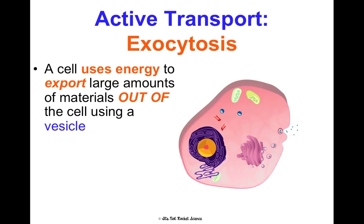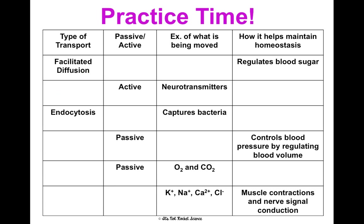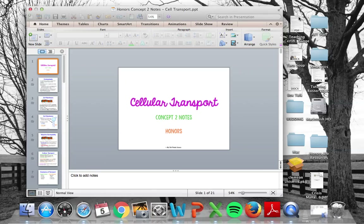Last but not least is exocytosis — using energy to export things out of the cell using a vesicle. This is how nerve cells release neurotransmitters to pass signals to your brain. To wrap up, take a minute to fill in the chart with the six types of transport, labeling whether they're passive or active, giving examples of substances moved each way, and explaining how each helps maintain homeostasis — which is the big picture goal of this concept.